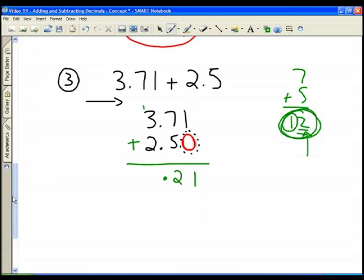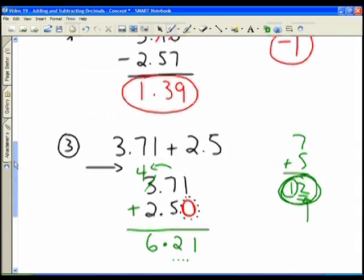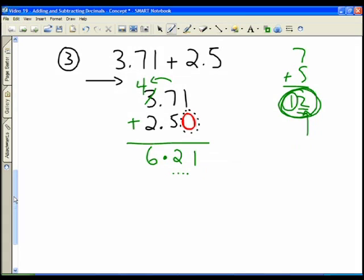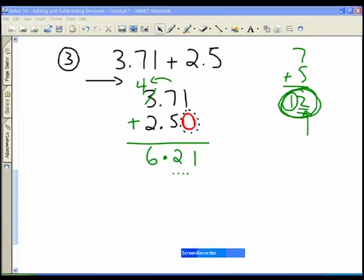And so now instead of being 3, this number, because 1 transferred over, because we were more than 10 here, this number becomes 4. And now 4 plus 2 is 6. So you see, sometimes you have to carry over to the left, and sometimes you have to borrow from the left and carry it over to the right. So I hope that gives you a good review of adding and subtracting decimals.